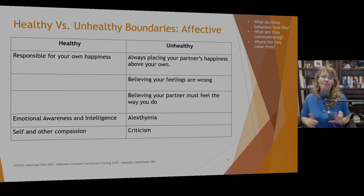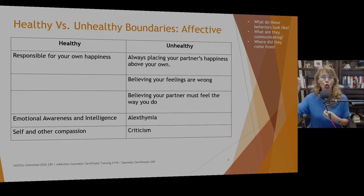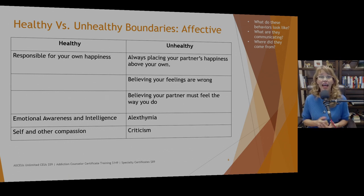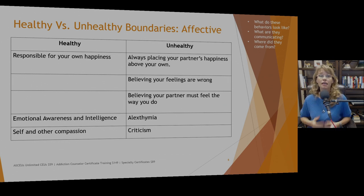Finally, healthy affective boundaries include the ability to have compassion for yourself and others, recognizing that nobody's perfect. Instead of being critical of how somebody else is reacting, we have compassion for them. Instead of saying 'you shouldn't feel that way,' we say 'you feel how you feel, and I'll sit with you.' And being compassionate with ourselves means not telling ourselves we should or shouldn't feel a certain way — respecting how we feel in the moment.